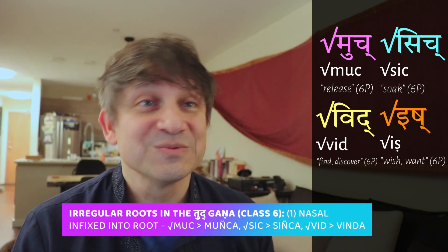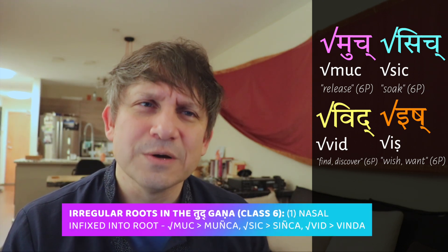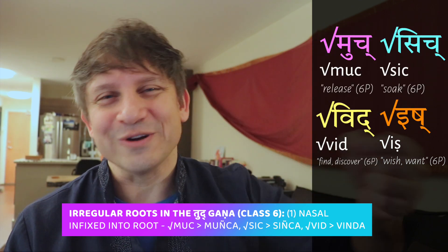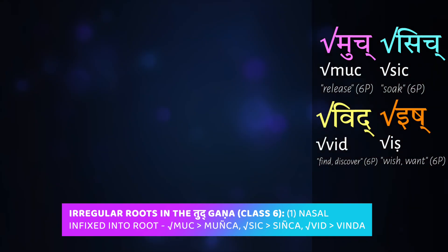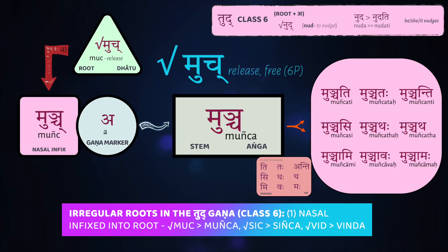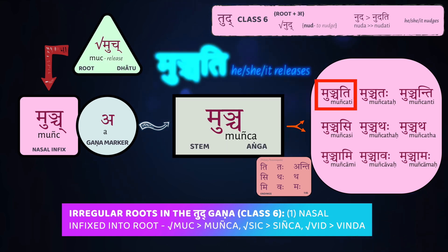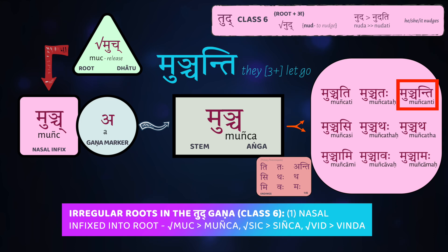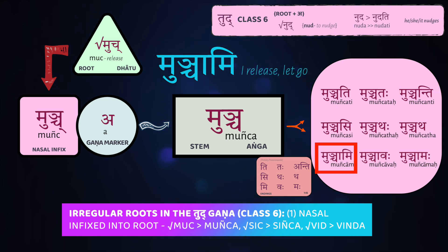There are a couple of irregular sixth class roots to look at. One involves a nasal n that gets inserted — or infixed — into the root during stem formation. One such root is muc, a very important one meaning to release or let go of something. Muc first turns into a stem, with the insertion of the palatal nasal and the a-gana marker added. So muc is the root; munca is the stem. From that stem we get muncati: she releases, he lets go; they let go; aham muncami — I release, I let go.